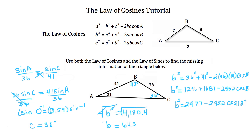So now, using the Law of Sines and the Law of Cosines, we've solved for all the missing angles and all the missing sides of this triangle. Now lastly in this tutorial, I'd like you to take a look at a word problem.